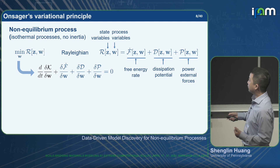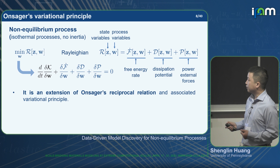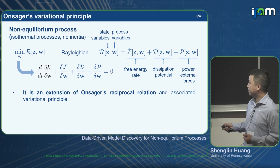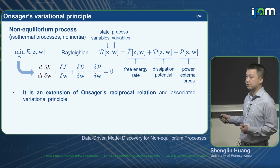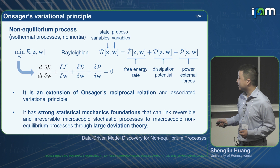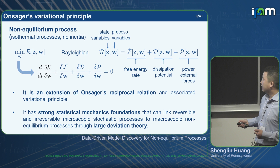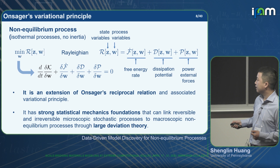Why do we use the Onsager variational principle? First, it is an extension of the Onsager reciprocal relation, which describes near-equilibrium linear response — the Onsager principle is the nonlinear extension of that. More importantly, recent work has shown it has a strong statistical mechanics foundation: one can use large deviation theory to link the microscopic stochastic process with the continuum-level non-equilibrium process.